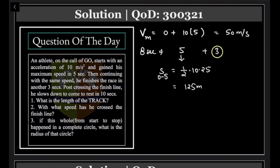...is speed into time, so 150m. So the total length of the track is 275 meters. Good.